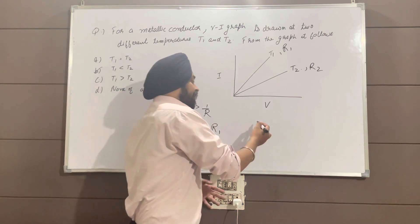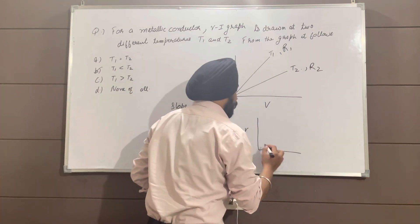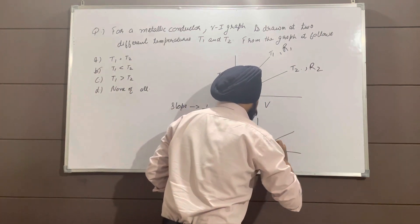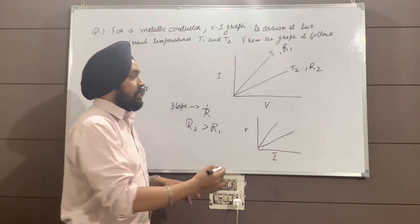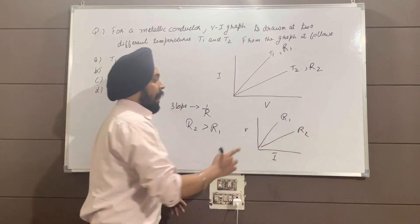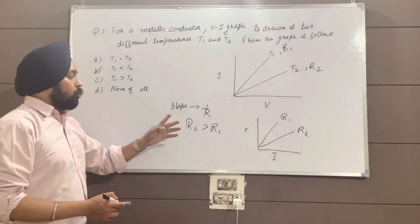If it was a VA graph like this, the slope would give resistance directly.